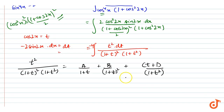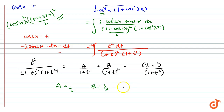हम यहाँ पर इसका LCM लेंगे और फिर t square, t की और constants को अगर हम compare करेंगे तो हमारे पास A की value आ जाएगी half, B की value भी यहाँ पर half आ जाएगी, and C की value आएगी minus half, and D की value आएगी zero, D will be equal to zero.